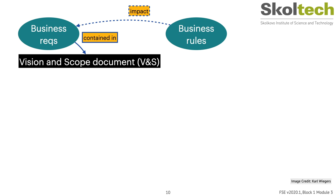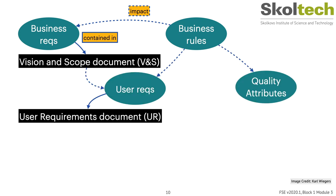Business requirements are typically written down as a vision and scope document. User requirements describe goals or tasks that users must be able to accomplish using the product, and the product should be useful to them. This area also involves describing quality attributes important to achieve customer satisfaction. One famous way of representing user requirements is through use cases and user stories, as well as a variety of UML diagrams.